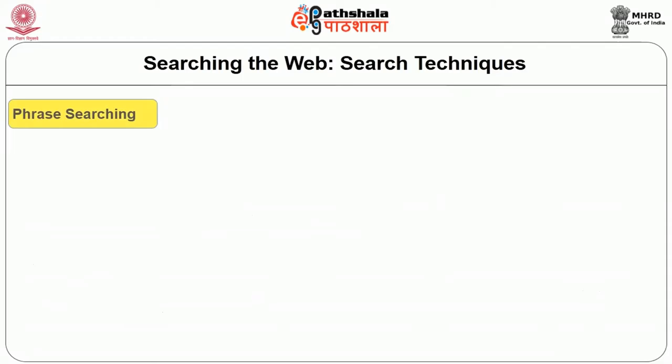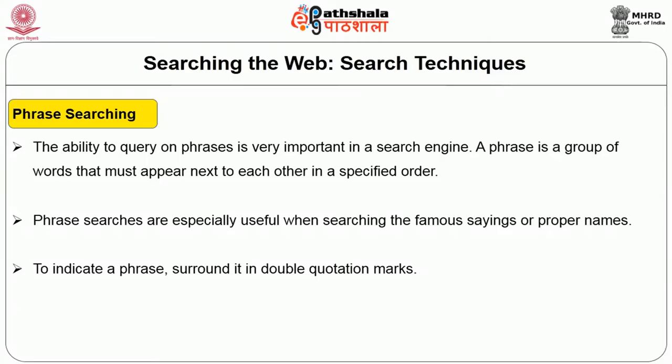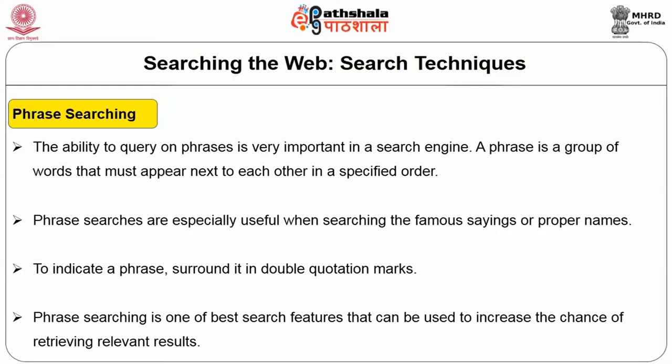Phrase searching is the ability to query a phrase — a group of words that must appear next to each other in a specified order. Phrase searches are especially useful when searching for famous sayings or proper names. To indicate a phrase, the words are surrounded in double quotation marks. Phrase searching is one of the best search features that can increase the chance of retrieving relevant results.